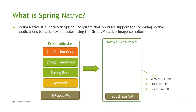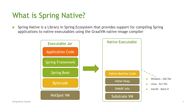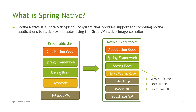The next element is dwarf info, which is information that can be used during debugging. Then we have initial heap, native machine code, Spring Boot compiled into native machine code, Spring Framework compiled into native machine code, and our application code also compiled into native machine code.